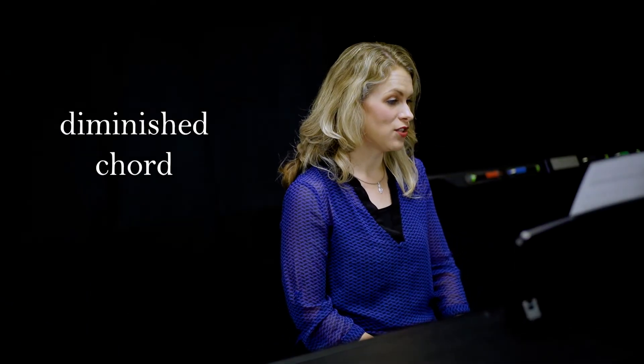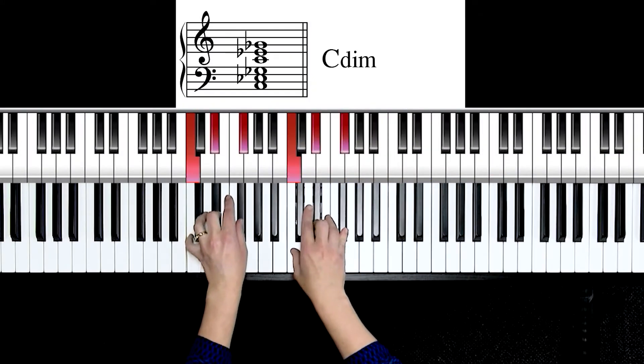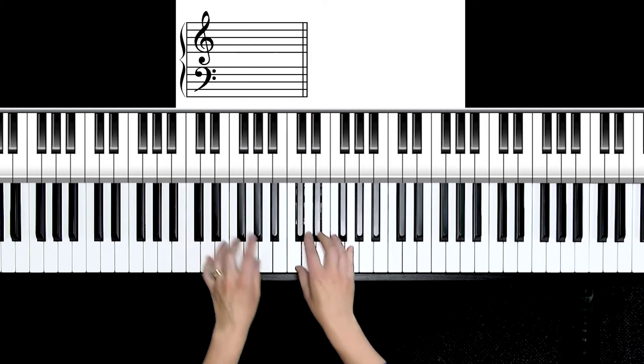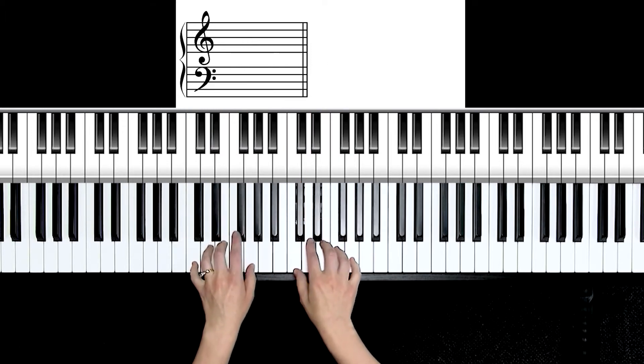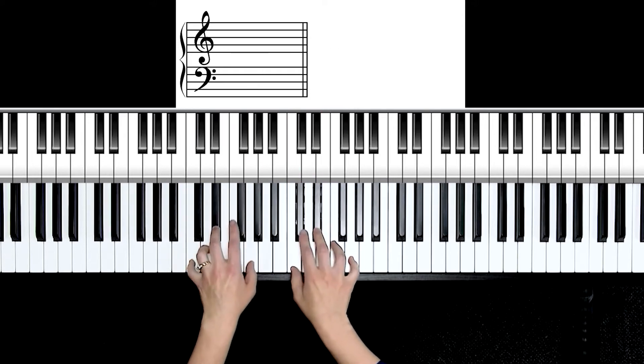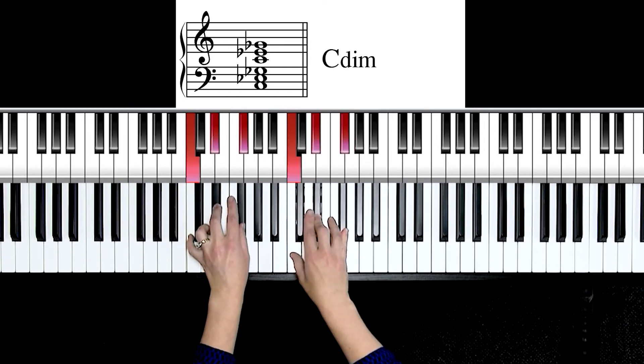Last up is the diminished chord. Let's go back to the key of C, which you hear at first. They're very dark and somber in color. They often are built on seven chords or two chords. Go back to your major triad. Lower the third one half step, E to E flat. Lower the fifth one half step, G to G flat. You have a diminished chord.